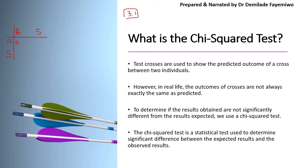This cross tells us that the offspring could be AA, AS, AS, or SS. So this cross is telling us that there is a 25% chance of having a child with sickle cell anemia, a 50% chance of having a carrier child who has the sickle cell allele but would not be ill, and a 25% chance of having a normal offspring.